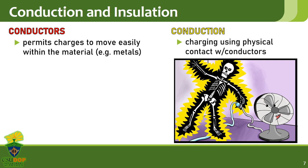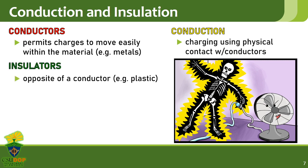Insulators, on the other hand, block the flow of charges. Examples of these are plastic and glass. One application is to prevent electrocution. Electrical wires made of copper are usually coated with plastic or rubber to prevent the flow of charges from the wire to your hands if ever you touch it.